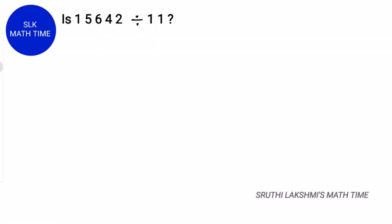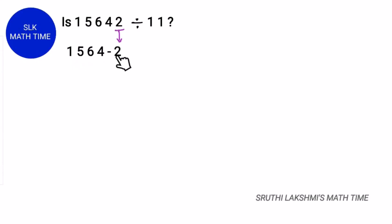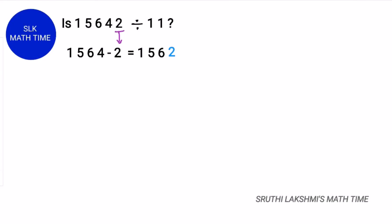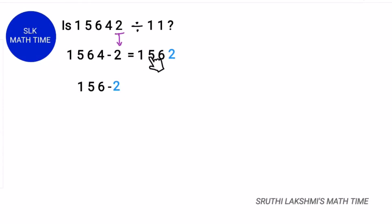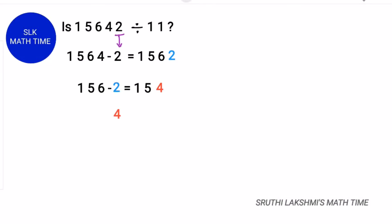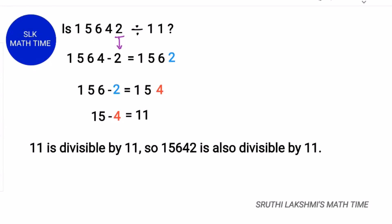Let's see another example. Is 15642 divisible by 11? The last digit here is 2, so we subtract 2 from the rest of the digits, which is 1564. We have to repeat this process until we know if the number is divisible by 11 or not. The last digit is 2, so we do 156 minus 2, because we subtract it from the rest of the digits. 156 minus 2 is 154. Here the last digit is 4 and the rest of the digits is 15. So, 15 minus 4 is 11. Since 11 is divisible by 11, 15642 is also divisible by 11.